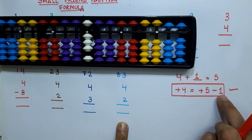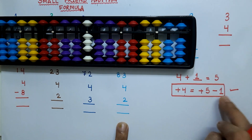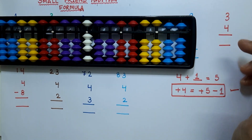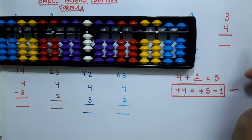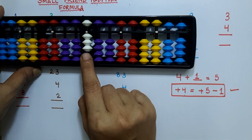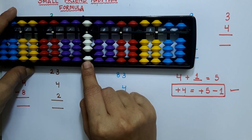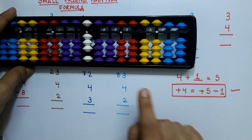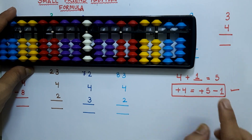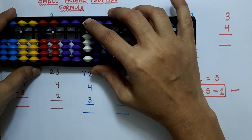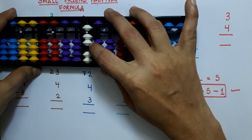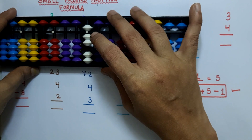After learning this formula, now we can solve this sum. So 3 plus 4: we replace plus 4 with plus 5 minus 1. The answer here is 7.